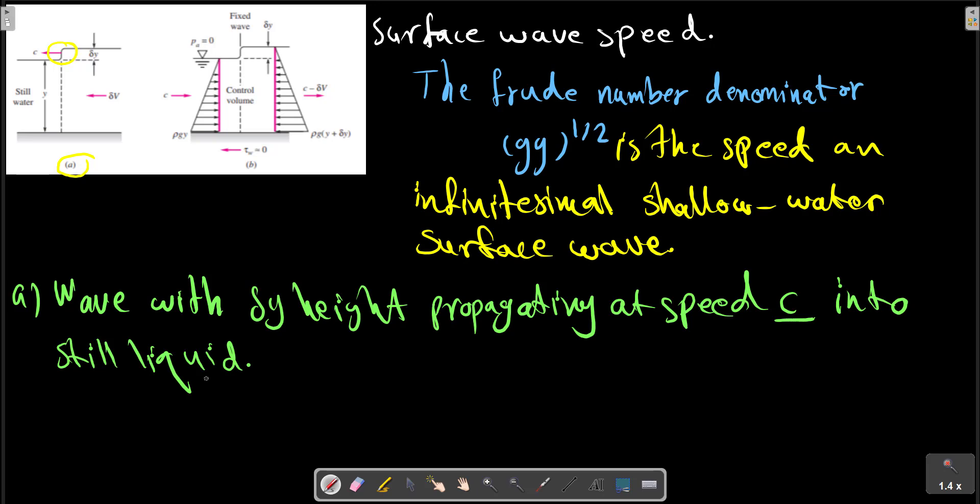To achieve a steady flow in an inertial frame of reference, we fix the coordinate on the wave. It is exactly analogous to the speed of sound flow in the fluid. We can use the analysis shown in the figure.